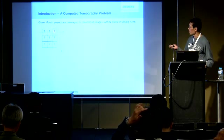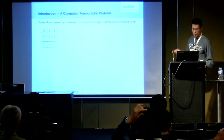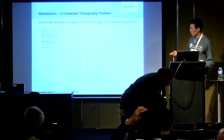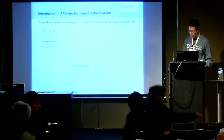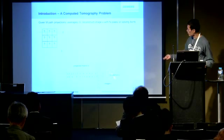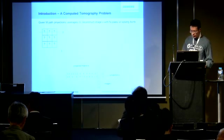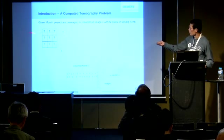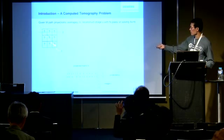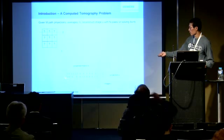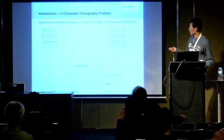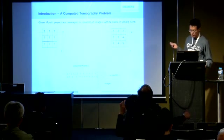Here is a very simple example. We have a three-by-three image and we have two projections. If we write down all the equations, the first part is a projection matrix, and we want to reconstruct the image, which is vectorized, and here we already know the projections. The first path crosses the first three pixels, so each pixel gets a weight of one-third. The second path crosses the diagonal, so every diagonal pixel gets a weight of one-third. After we solve this equation, we can get the pixel values.